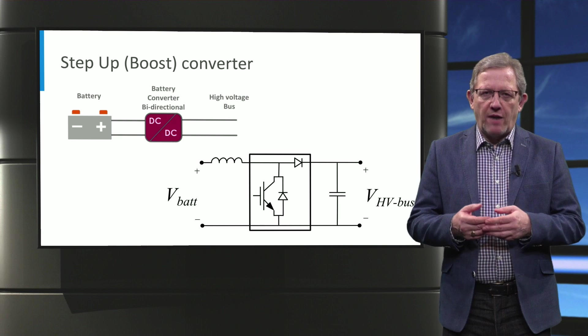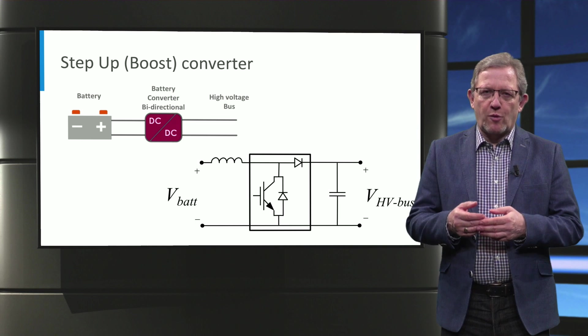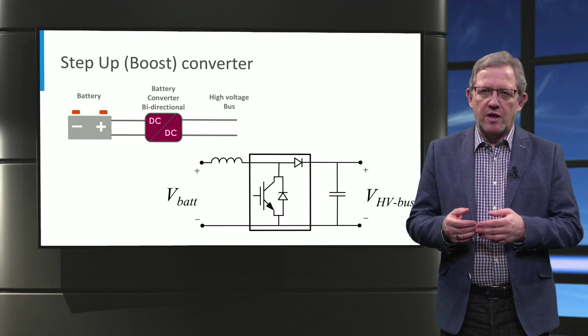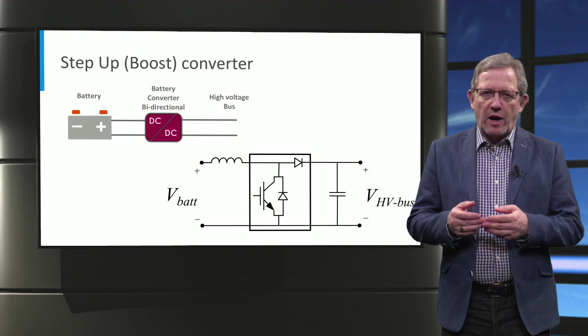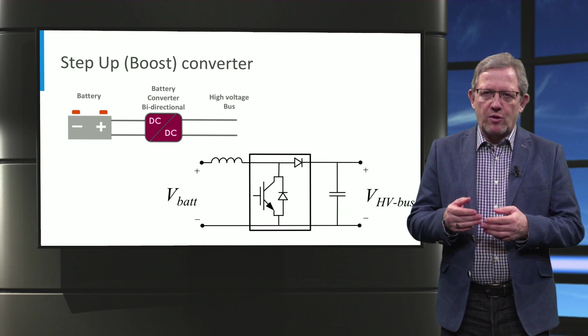For example, when you drive the electric car, the battery provides the power to the motor from propelling the car. In this case, the bidirectional battery converter is working in a boost mode, which is to convert the power with the load battery voltage into the power with the higher voltage on the high voltage bus.